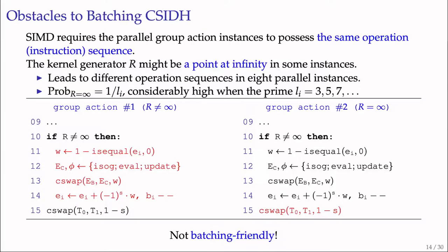To obtain a batching-friendly and constant-time CSIDH group action, we need to mitigate this mismatch problem. In the following, we present three different methods to solve this if-conditional statement regarding the kernel generator R.